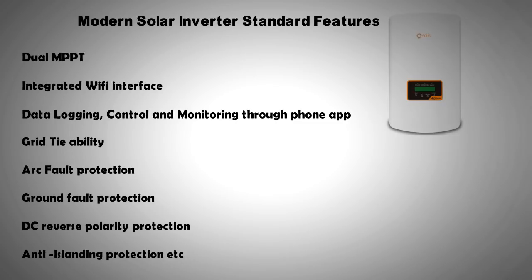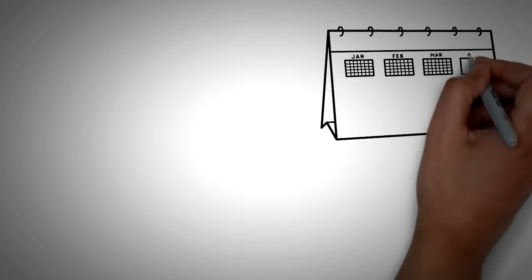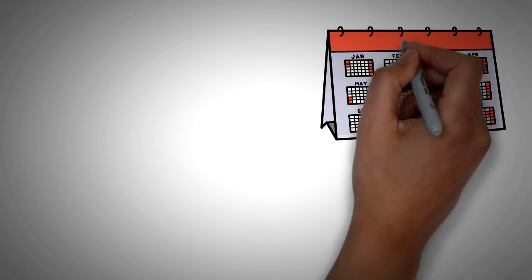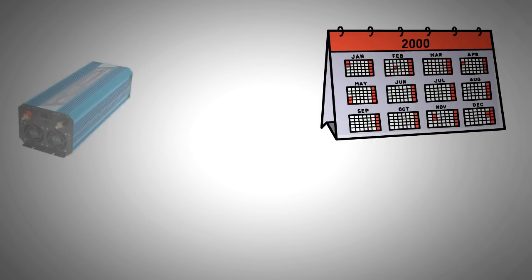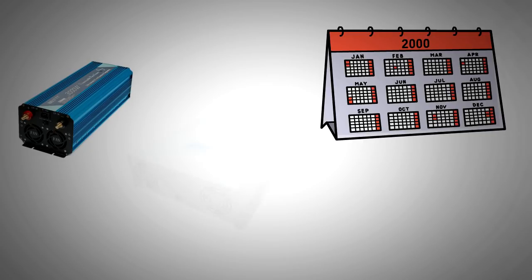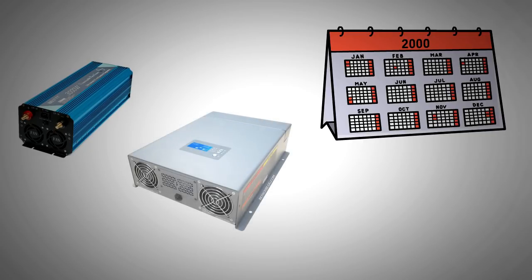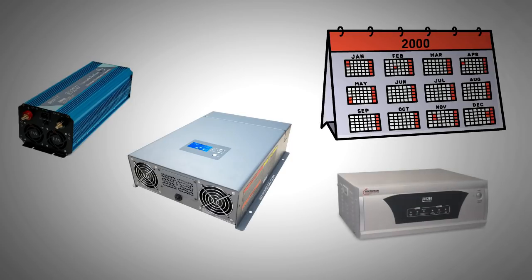So when were these advanced solar inverters for domestic applications developed? Let's have a look at that. Twenty years ago, you had almost none of these features in a domestic solar inverter. In fact, most home inverters back then were UPS inverters, which are designed mainly for using large lead acid batteries as a source to provide uninterrupted power in case of power cuts.